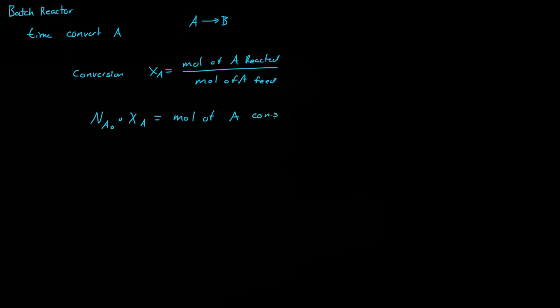So now if we wanted to find the moles of A in the reactor, so just NA, well that's equal to NA naught minus the amount of moles of A that were consumed. So then we get NA naught times XA. So this will give us the moles of A in the reactor at this time, or at this conversion.